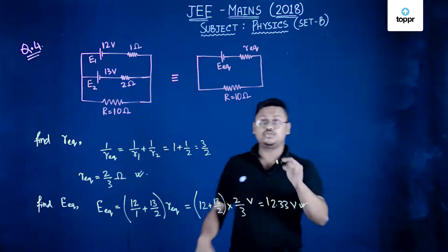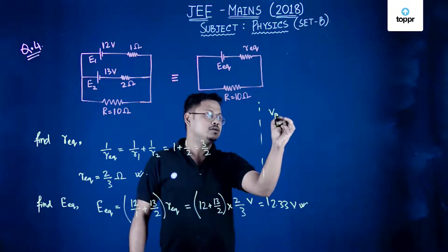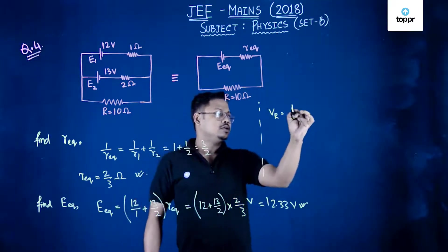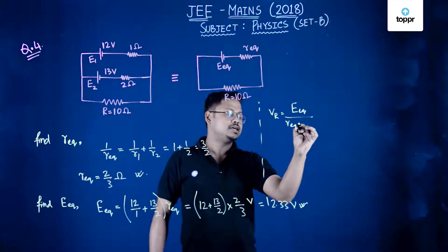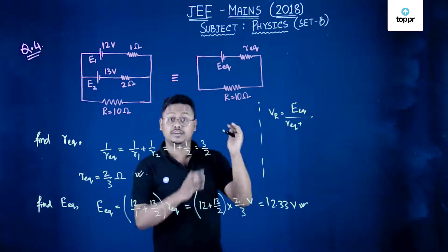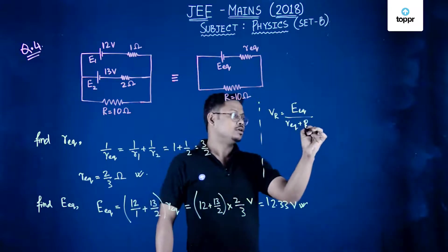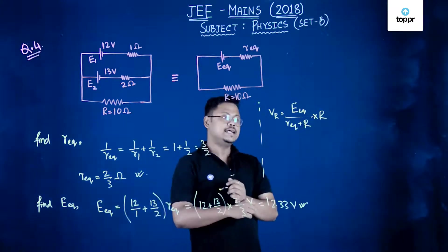Now the voltage drop across R, that is VR, will equal equivalent EMF divided by total resistance, that is internal resistance equivalent plus load, into load resistance, right?